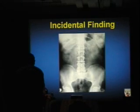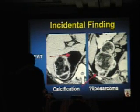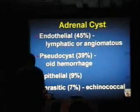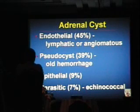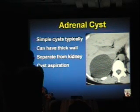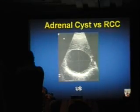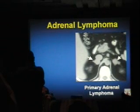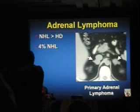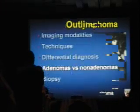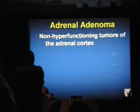Large adrenal masses with calcification: if you see fat within, it's a myelolipoma — a leave-alone lesion regardless of size. Adrenal cysts are uncommon; they look like simple cysts but can have thick walls, and the dilemma is separating them from the kidney and confirming the walls aren't too thickened. Primary bilateral adrenal lymphoma is defined as occurring more than 6 months before onset of disease elsewhere, more typically in non-Hodgkin's than Hodgkin's. Adenoma vs. non-adenoma: adenomas are non-hyperfunctioning cortical tumors, commonly incidentally found. Calcification, necrosis, and hemorrhage are rare in adenomas.